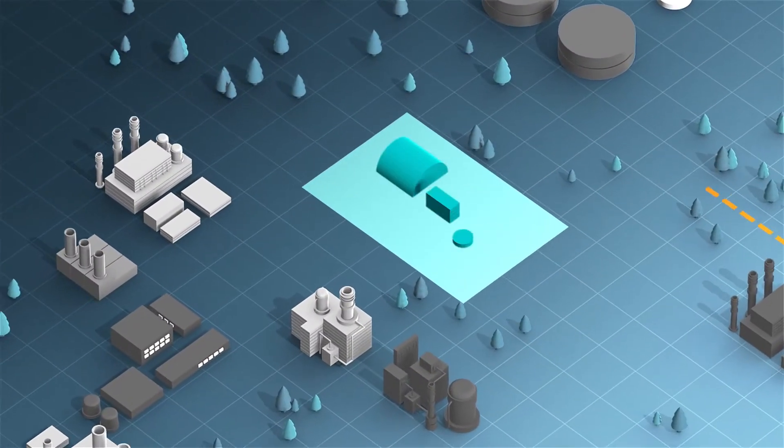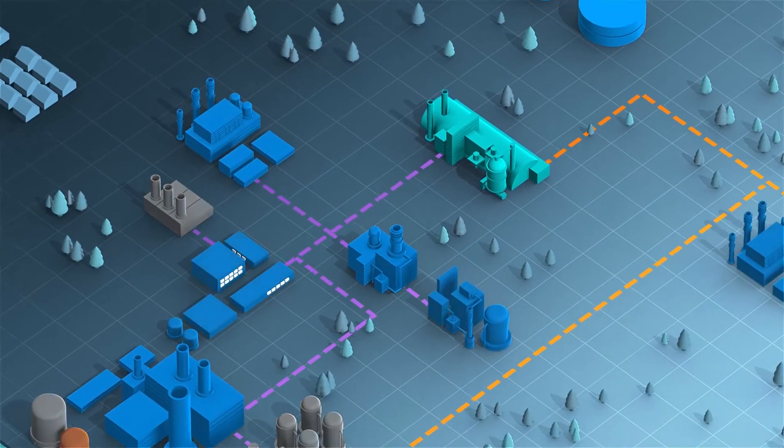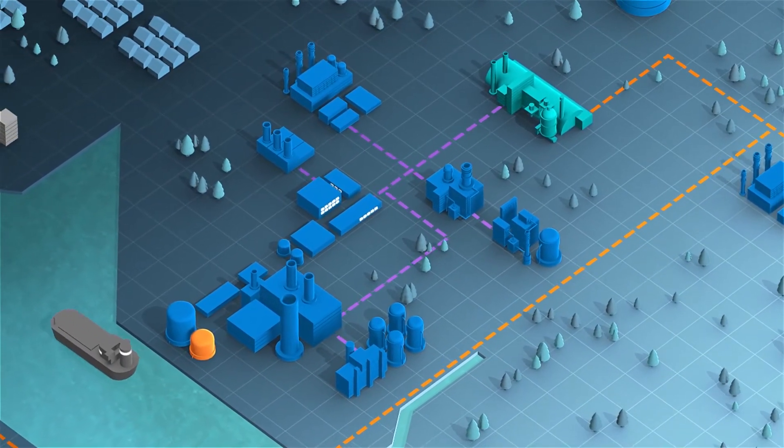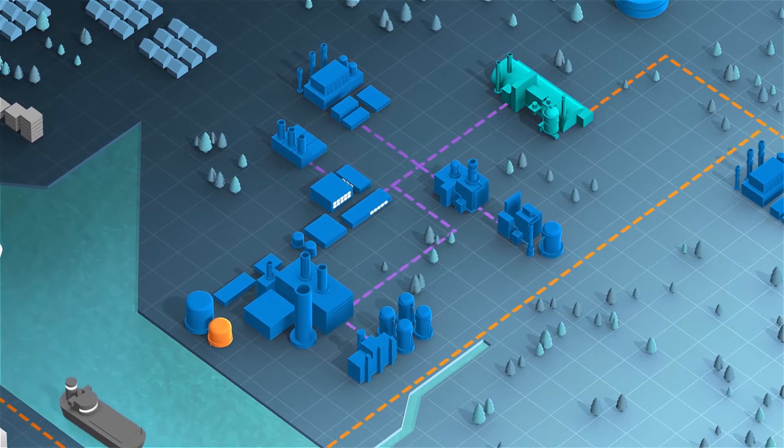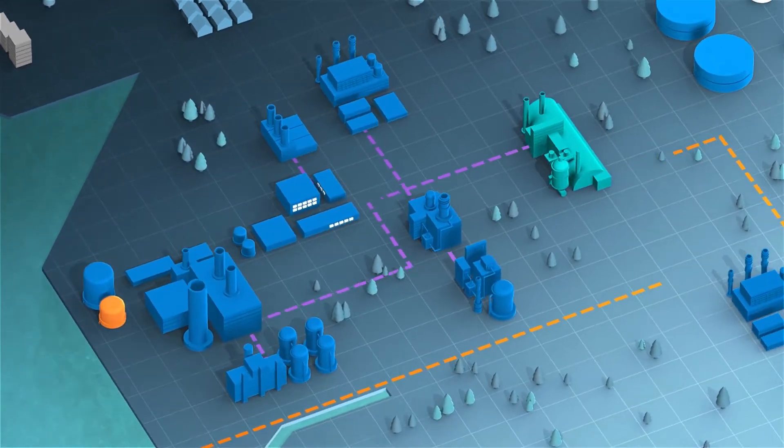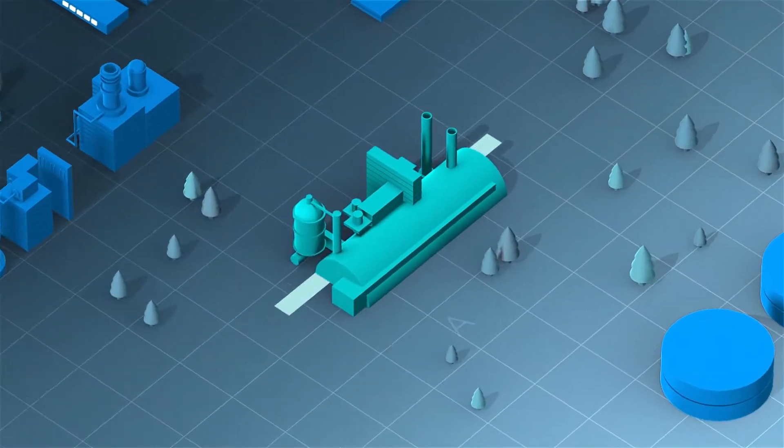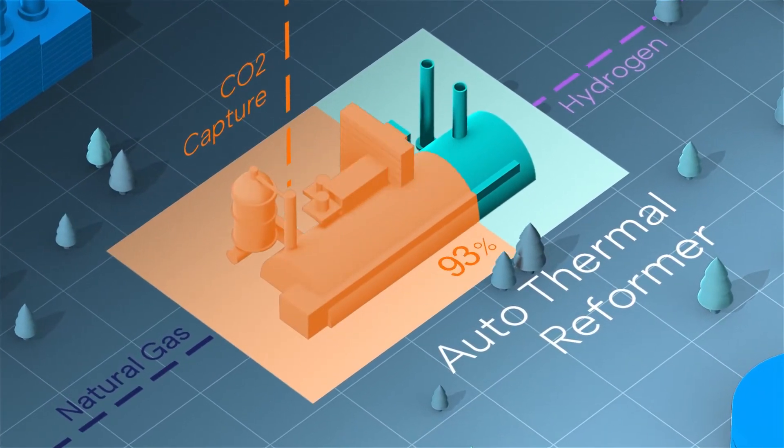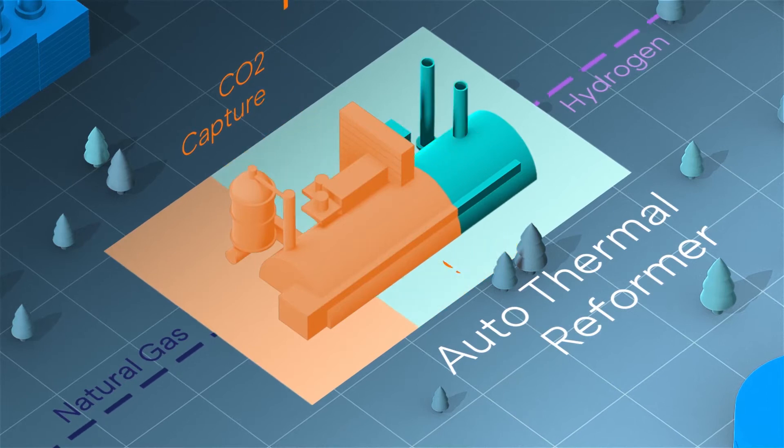When it comes online in the mid-2020s, it will be the world's largest hydrogen production plant with carbon capture and storage technology, supplying hydrogen to industrial customers and a power station at Saltend Chemicals Park. H2H Saltend will produce hydrogen from natural gas while capturing at least 95% of the CO2 by-product.